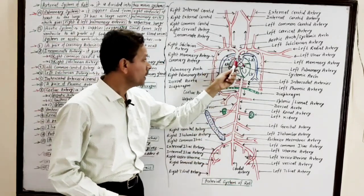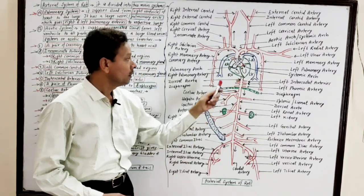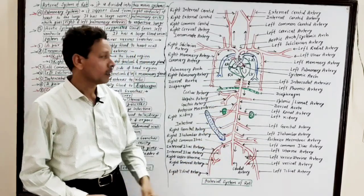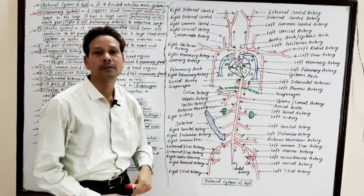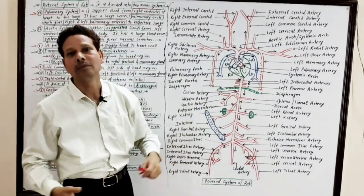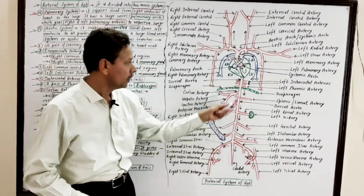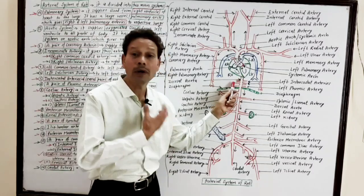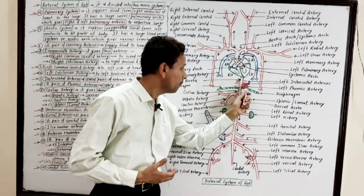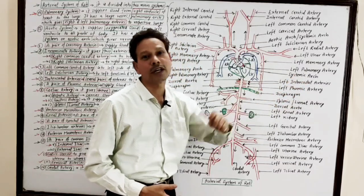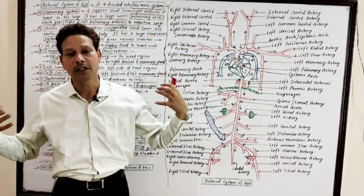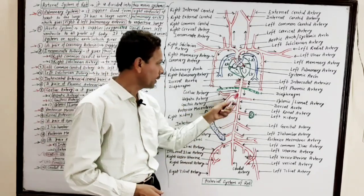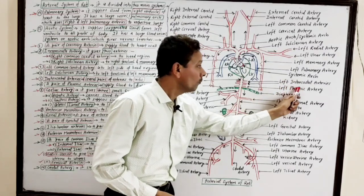Then the aortic arc descends and becomes the dorsal aorta, in which the direction of blood flow is always in a backward direction. From the dorsal aorta, several blood vessels arise. First, in the thoracic region, several pairs of intercostal arteries carry oxygenated blood to the thoracic region and the ribs. Then a pair of phrenic arteries supply the diaphragm — the partition between the abdomen and thoracic region.